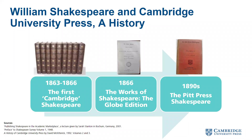Shakespeare was actually born just 30 years after Cambridge University Press was founded, but it wasn't for another three years that we started to print his works. Since then, Cambridge has been publishing his plays and poetry pretty much continuously in a wide variety of forms. This all started in 1863 — before Cambridge University Press actually edited any of Shakespeare's works, we printed a nine-volume edition for Macmillan, a different publisher. It was a big project and wasn't actually finished until 1866.